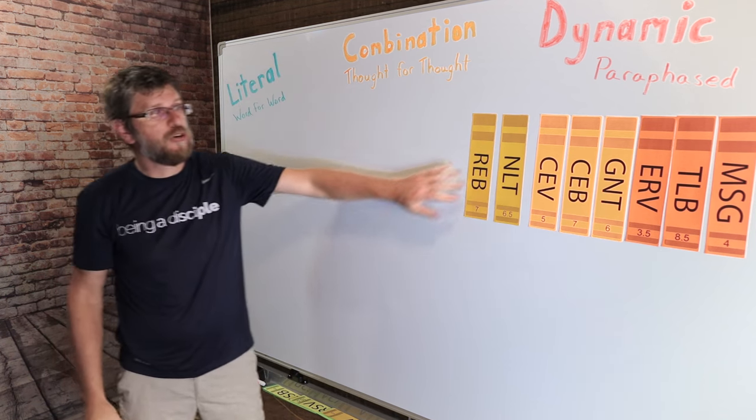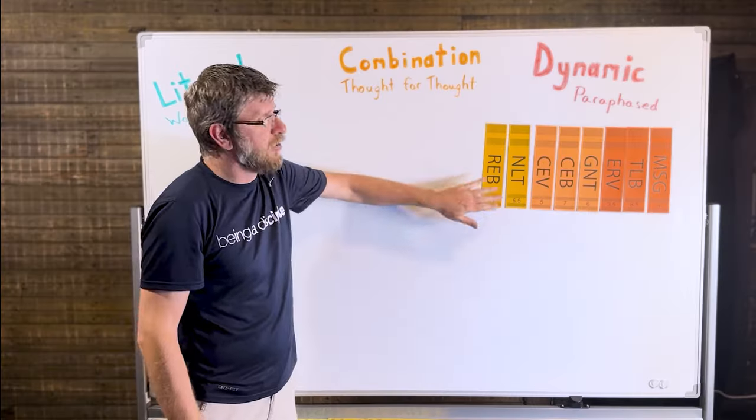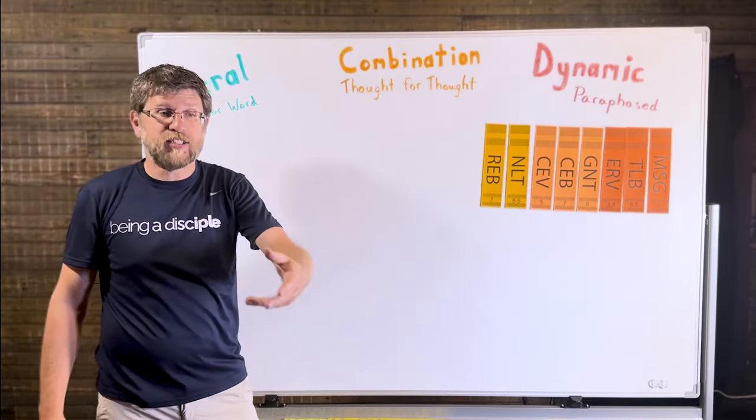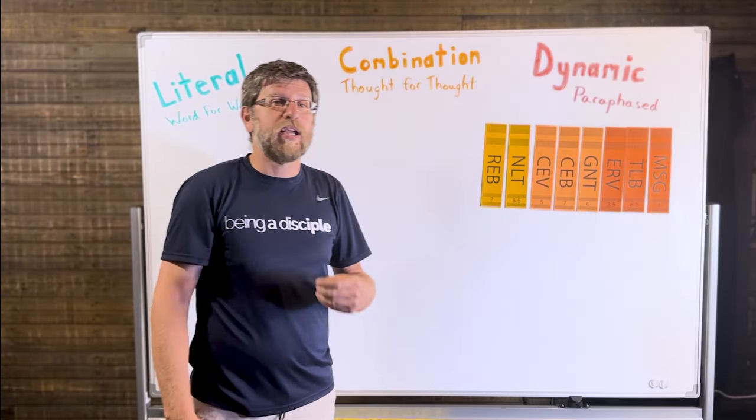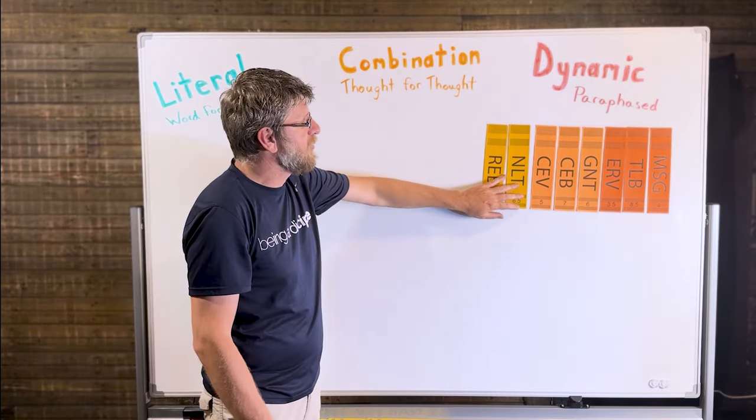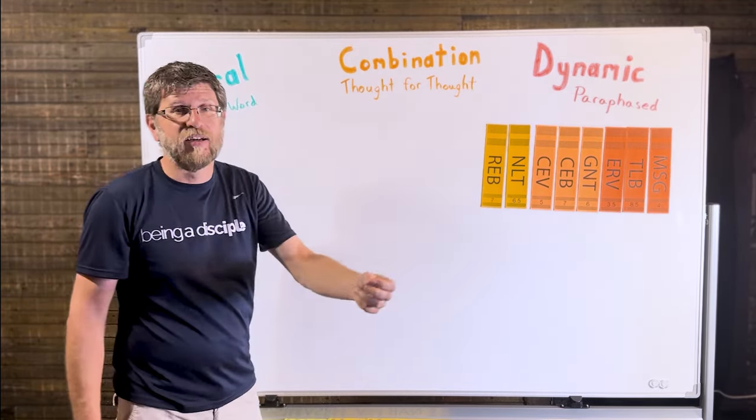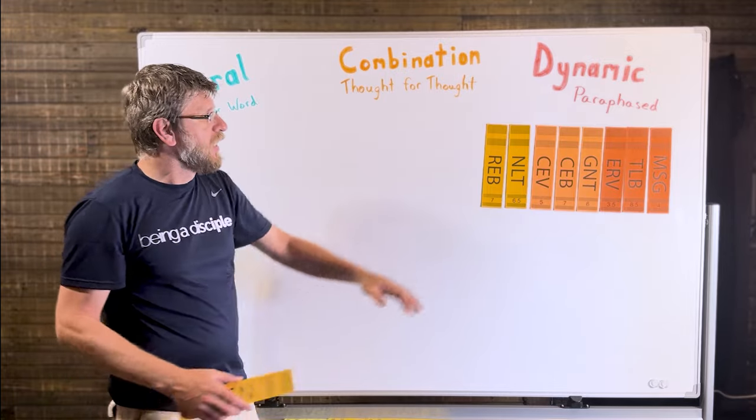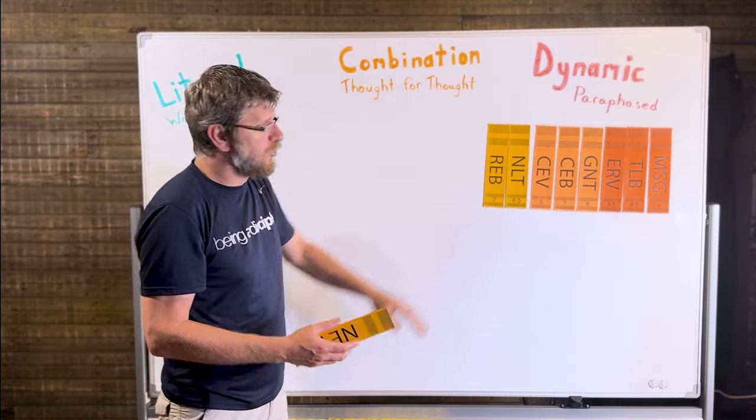It also dealt with some of the gender language in the text. It tried to be a little bit more gender neutral. So when you're reading the Psalms, it'll say, instead of saying blessed is the man who walketh not, it'll say happy is the one. So it tries to take out some of those very specific words that said man versus male and female, and do a little bit more gender neutral language.